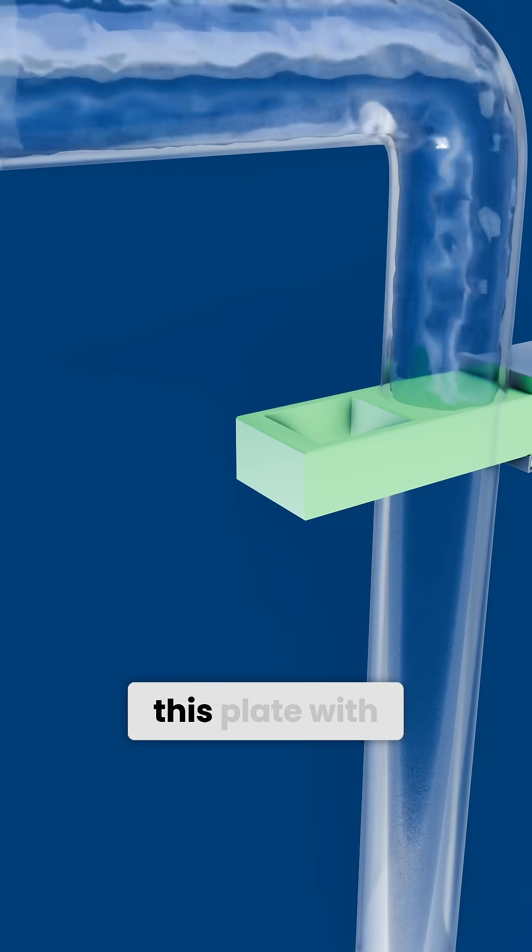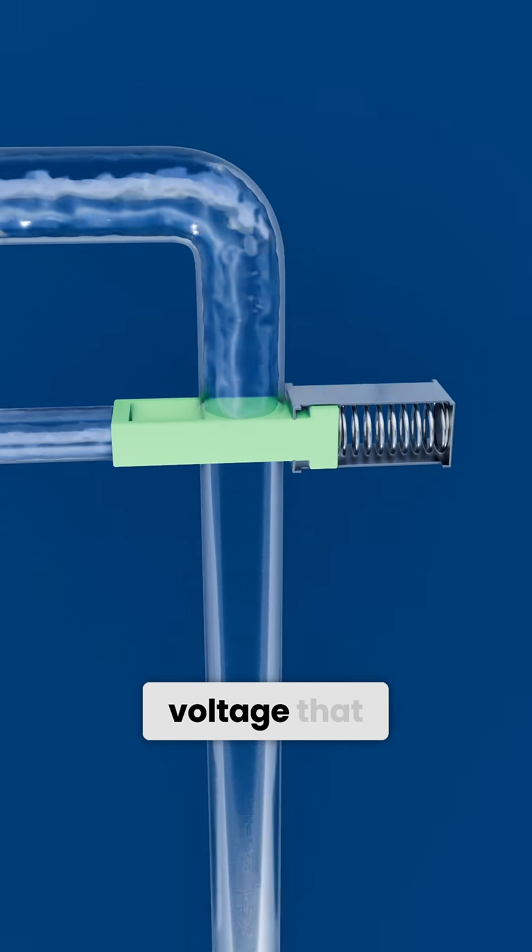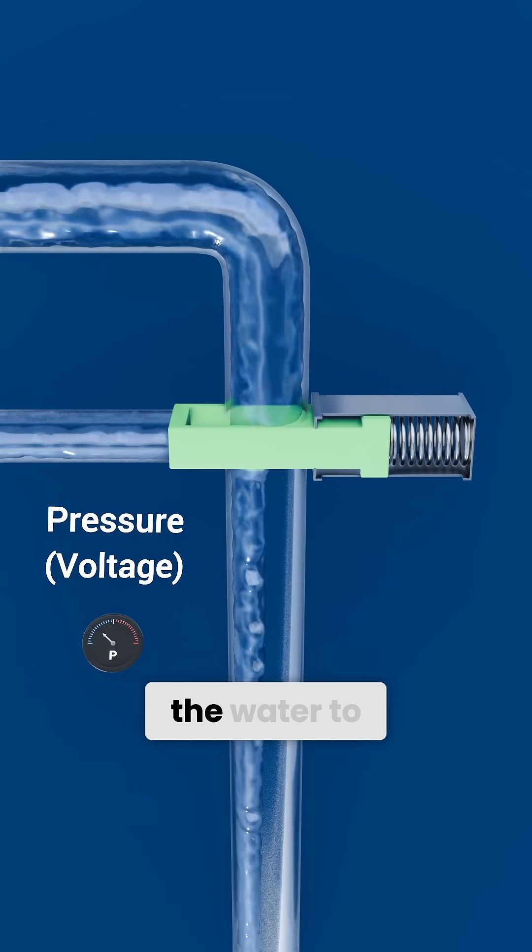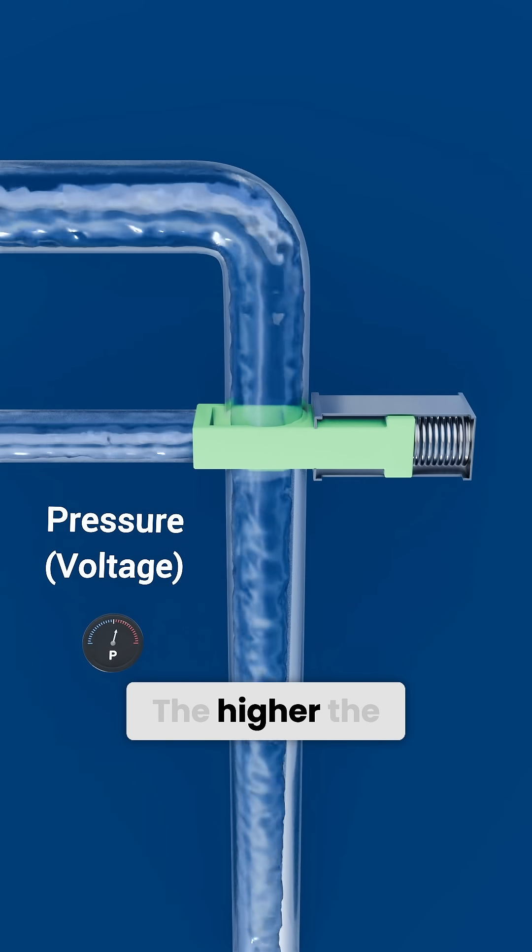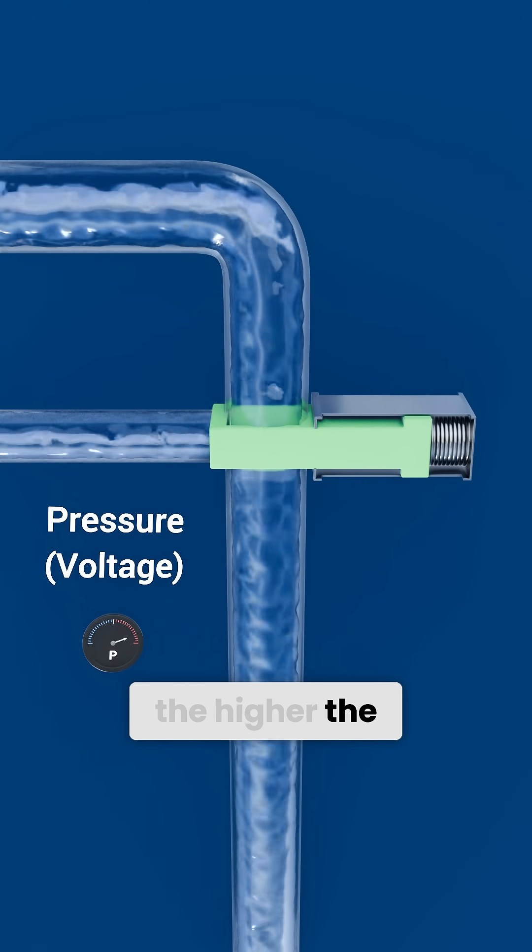Another pipe connects to this plate with a high enough pressure or voltage that the plate can be moved, allowing the water to flow through the hole. The higher the pressure or voltage, the higher the flow of water.